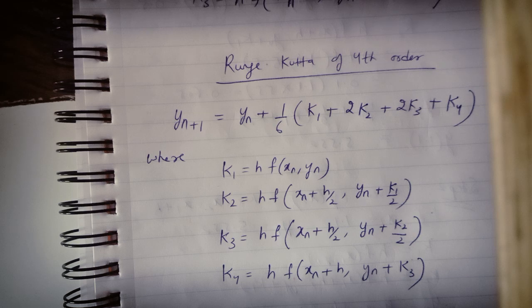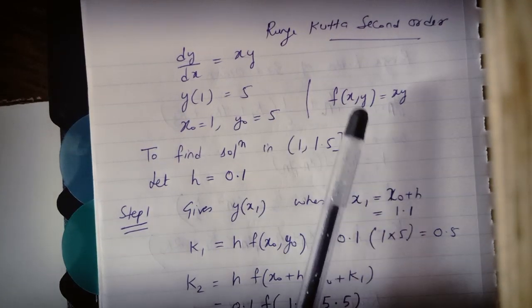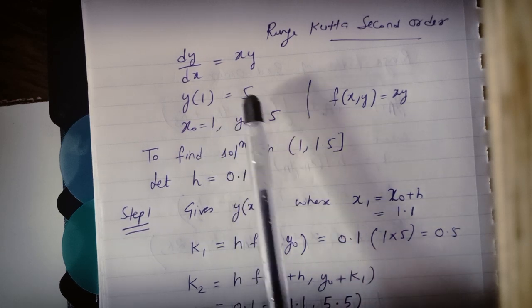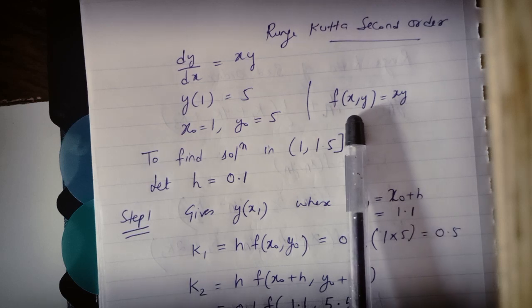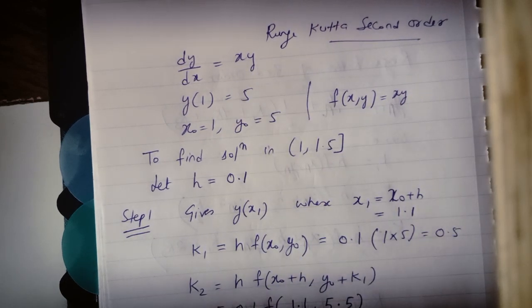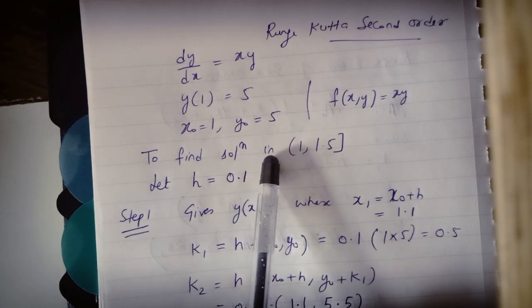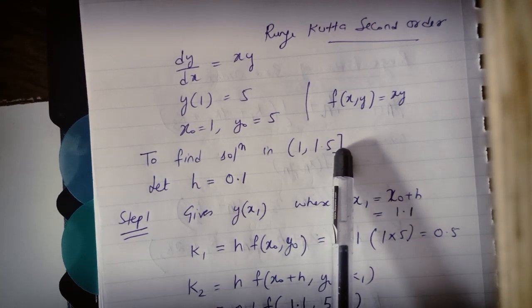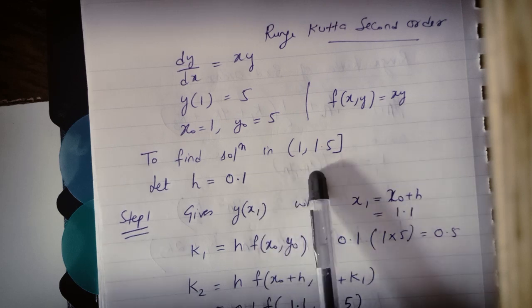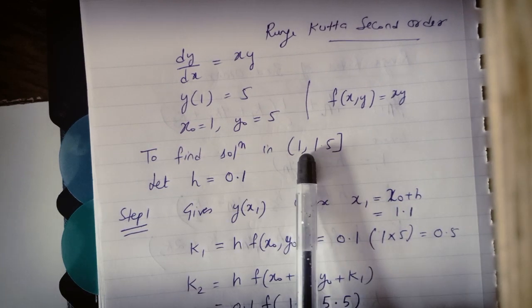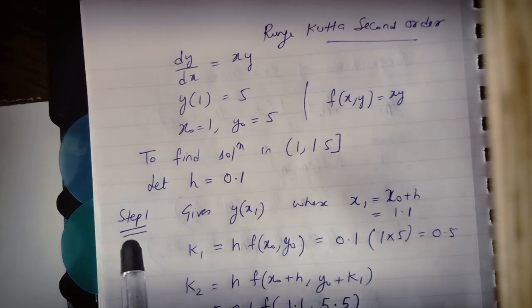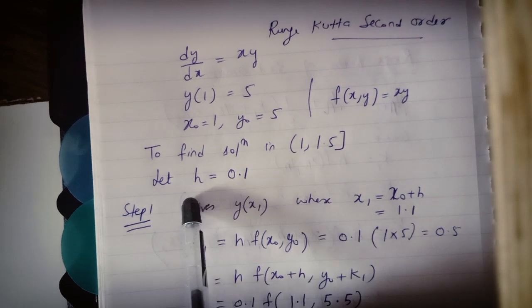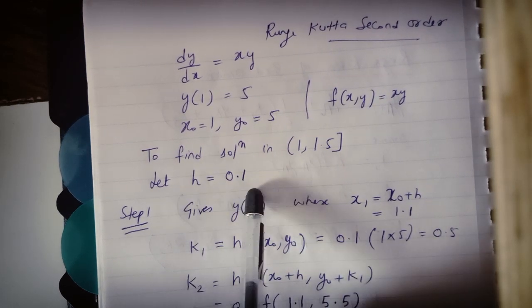Let us take one question on RK method of order 2. We need to solve dy/dx equals x*y, given y(1) equals 5. So x0 equals 1, y0 equals 5, and f(x,y) equals x*y. We have to find the solution in the interval [1, 1.5]. Since h is not given, we assume h equals 0.1. So x1 equals x0 plus h equals 1.1, and we will go up to 1.5 in steps of 0.1 — that is 5 steps total. I will demonstrate the first two steps.